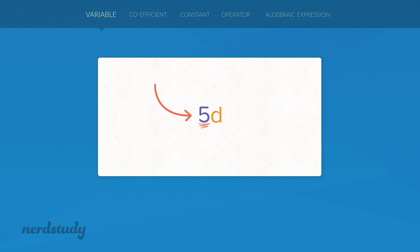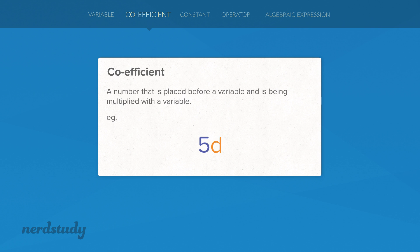The 5 over here is called a coefficient. A coefficient is a number that is placed before a variable and is being multiplied with a variable.